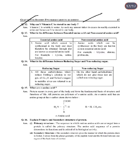Next: Why can't vitamin C be stored in our body? Vitamins B and C are water-soluble in nature. They can be readily excreted in urine and hence cannot be stored in the body.